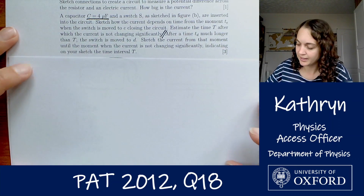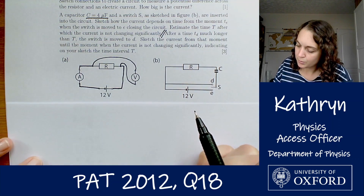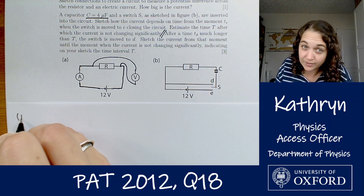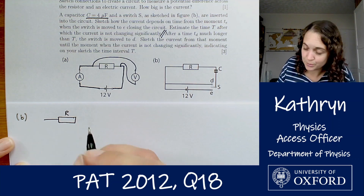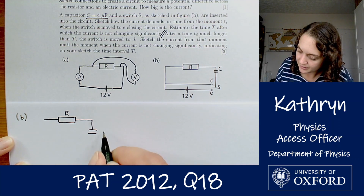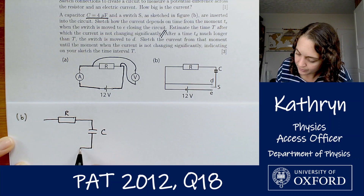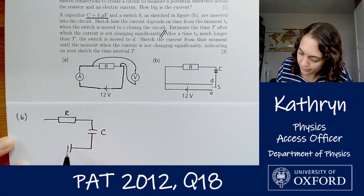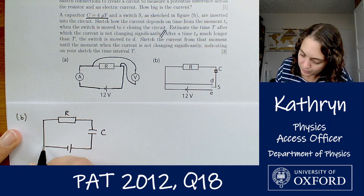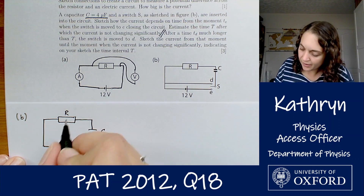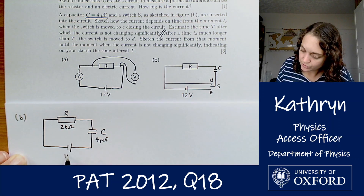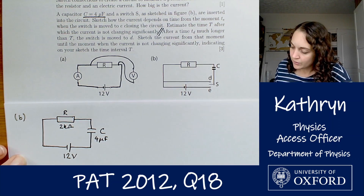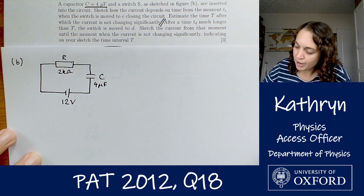Let's draw our circuit diagram for part B. So at the moment Te when the switch is moved to E, closing the circuit, we have our resistor R, our capacitor C, and our battery. R is 2 kiloohms, C is 4 microfarads, and the voltage source is 12 volts. What's the current going to do here?